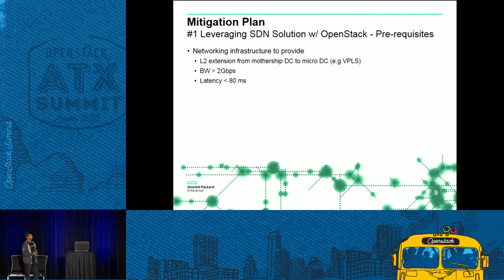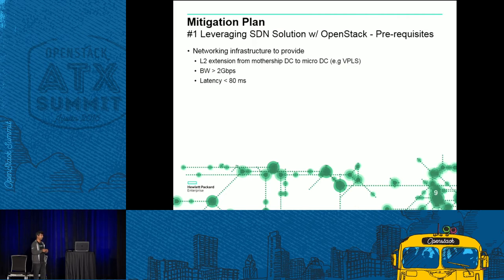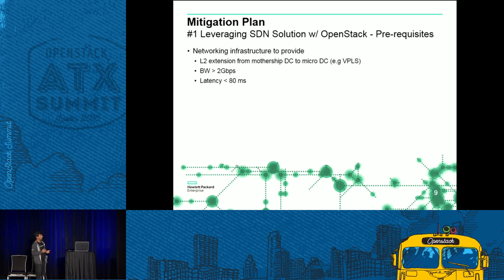The first prerequisite is an L2 extension from mothership DC to micro DC — a typical example is VPLS. Operators already have such infrastructure in place, so this is given on day one. The second prerequisite is bandwidth: at minimum 2 Gbps between the two sites, ideally 10 Gbps — essentially a LAN-type environment. We examined what types of transfers happen between the mothership DC and compute nodes: Glance image transfers, logs going back and forth, and workload monitoring traffic representing chattiness. The next topic discusses where latency matters most.